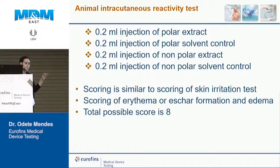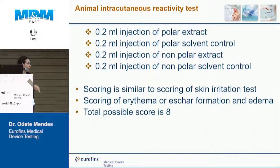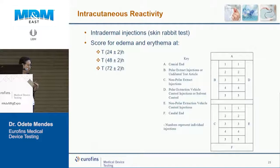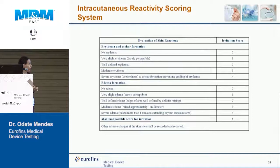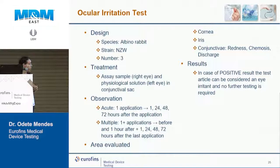Intercutaneous reactivity differs from primary skin irritation in that while skin irritation is applied on the skin surface, intercutaneous reactivity is injected inside the dermis. The standard volume is 0.2 mL, using both polar and non-polar extracts. Scoring follows a similar approach to the primary irritation test, evaluating edema and erythema, with positive and control sites for both extract types.